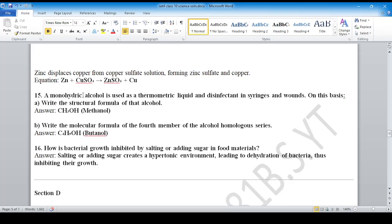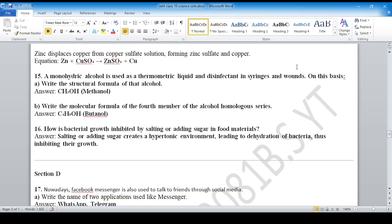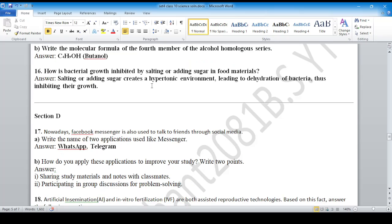Monohydric alcohol means single carbon with an OH group. Write the molecular formula of the fourth member. Fourth one: butanol, C4H9OH. Balance it: C4H10O. Dehydration question.